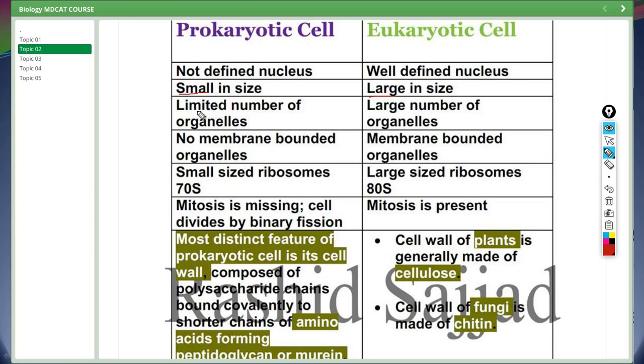Prokaryotic cells have a limited number of organelles. Eukaryotic cells have large number of organelles which are bounded by membranes. Prokaryotic cells have few organelles and are not membrane bound. Ribosome of prokaryotic cell is 70S. S stands for Svedberg, which is used as unit to express sedimentation rate. The ribosomes of eukaryotic cell is 80S.